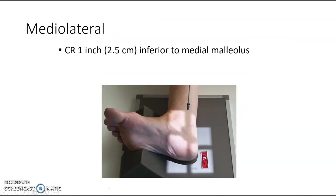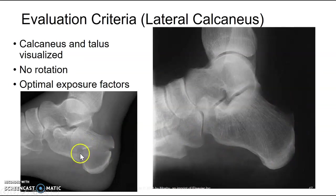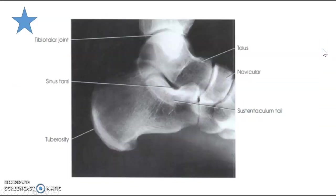The lateral calcaneus is almost exactly the same as the lateral foot position. You're just going to collimate to the calcaneus and center one inch inferior to the medial malleolus. Here is an example of a fractured calcaneus — you can see the fracture running through. Know your anatomy.